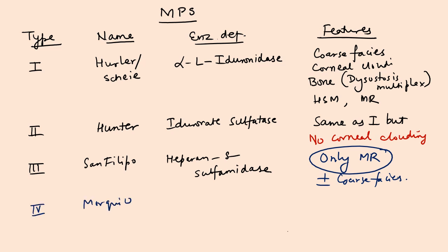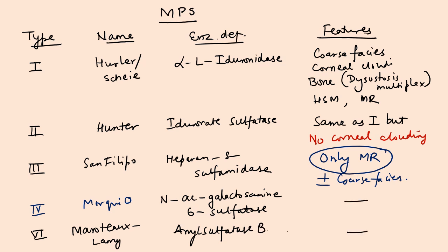What is the enzyme deficient here? It is iduronate sulfatase. What are the features? They are same as Hurler syndrome but there is no corneal clouding. This is very important. Type 3 is Sanfilippo, where the deficient enzyme is heparan N-sulfamidase, and they have only mental retardation. It is a very mild form except leaving out the CNS part. Type 4 is Morquio disease. The enzyme deficient is N-acetylgalactosamine 6-sulfatase.